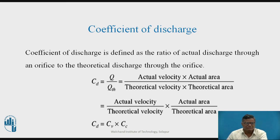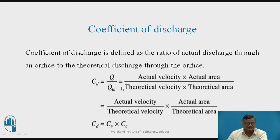The last one is the coefficient of discharge, defined as the ratio of actual discharge to theoretical discharge. This can be expressed as: (actual velocity / theoretical velocity) × (actual area / theoretical area). The first ratio is the coefficient of velocity, and the second ratio is the coefficient of contraction. Therefore, the coefficient of discharge equals the coefficient of velocity multiplied by the coefficient of contraction.